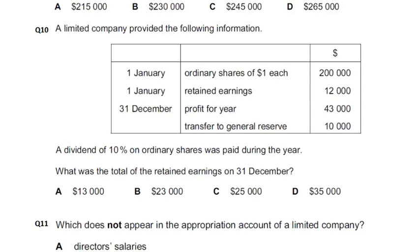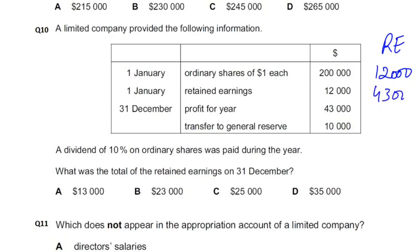How much of retained earnings will be? In the opening, it will be 12,000. How much profit will be? Profit retained earnings will be 43,000. And we transferred some money into general reserve — how much money will be transferred? 10,000. That money will transfer to general reserve.